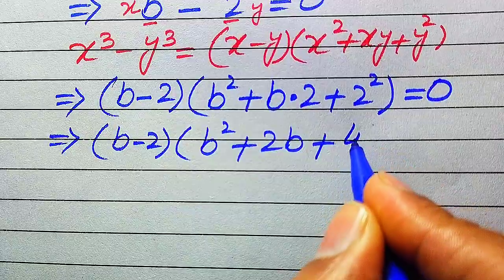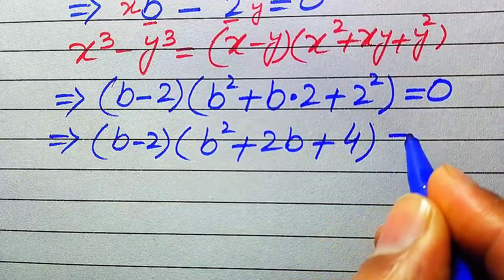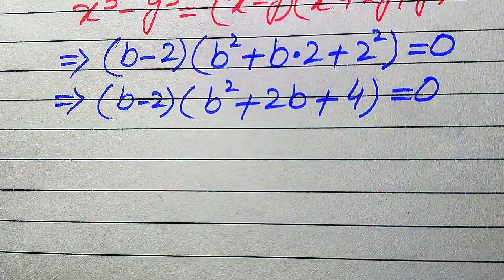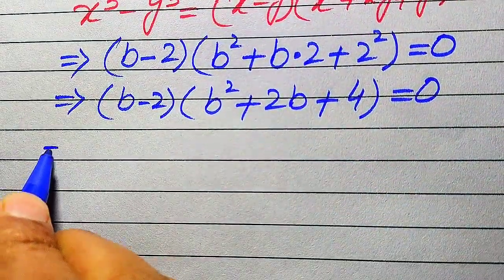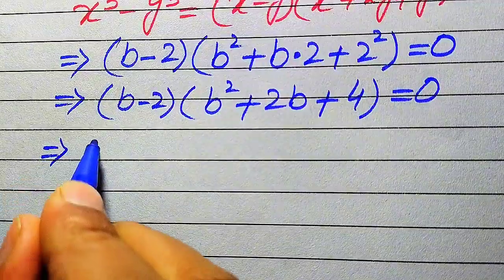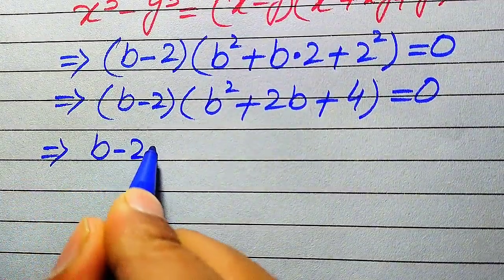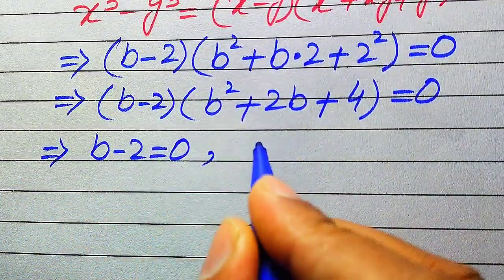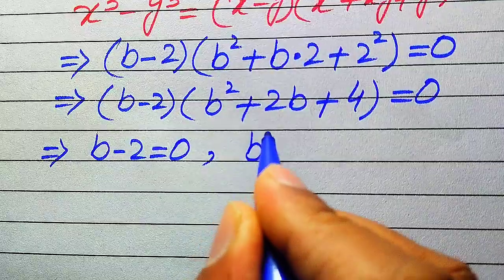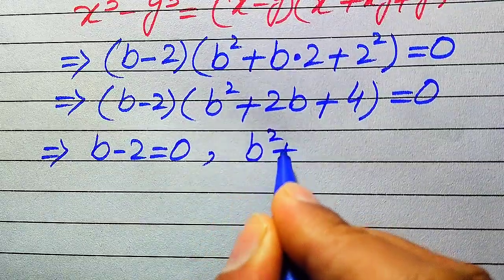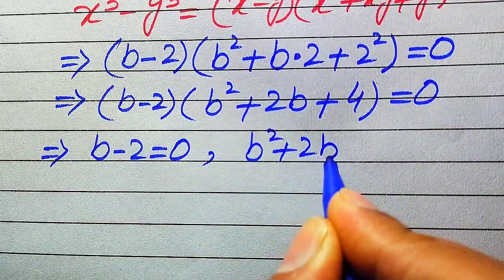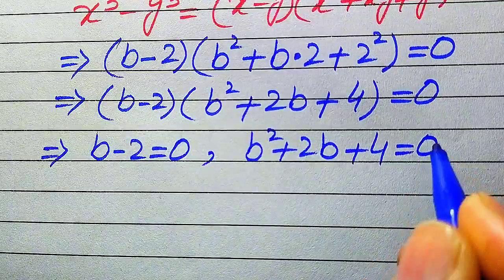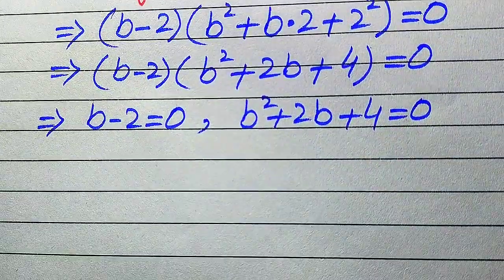After simplification, it is written as (b minus 2) times (b squared plus 2b plus 4) equals to 0. Now we need to divide this equation into two cases: the first case is b minus 2 equals to 0, and the second case is b squared plus 2b plus 4 equals to 0.